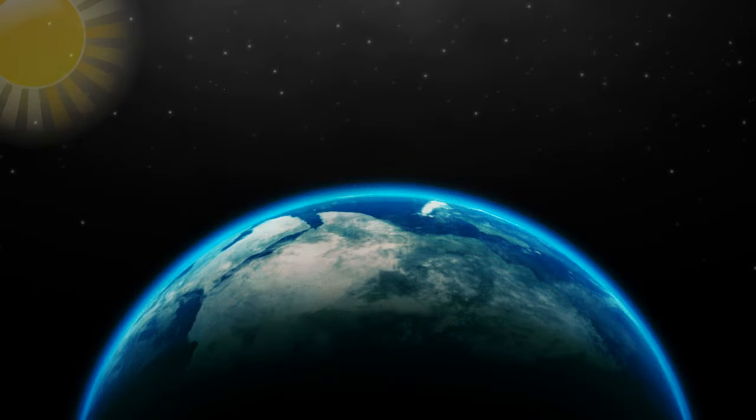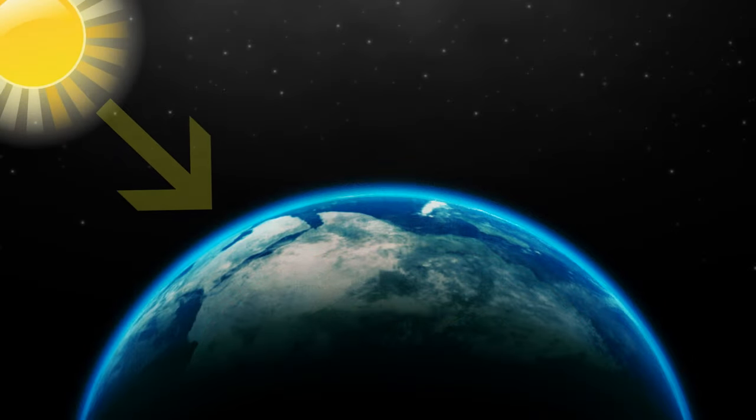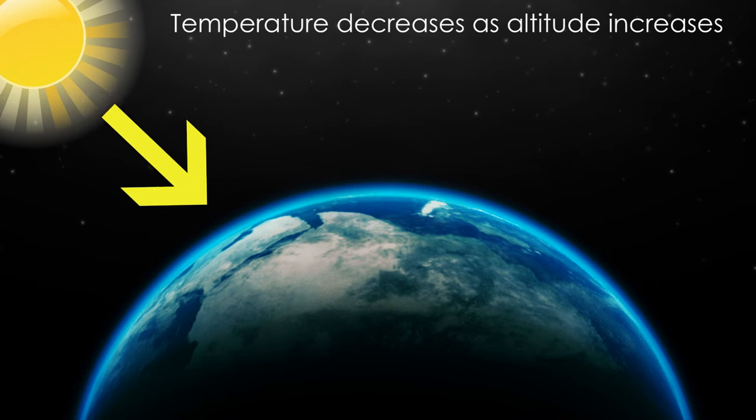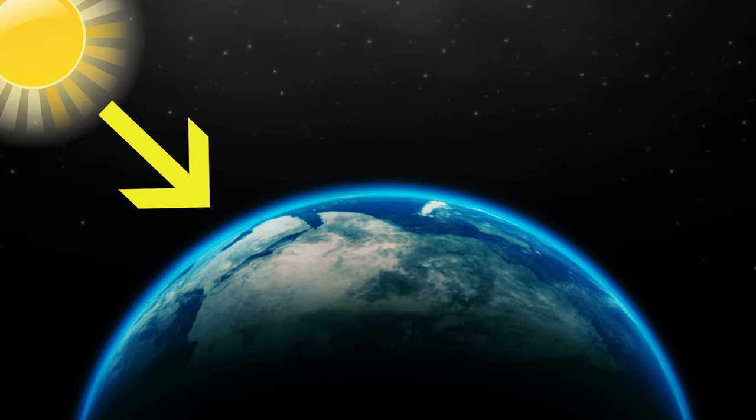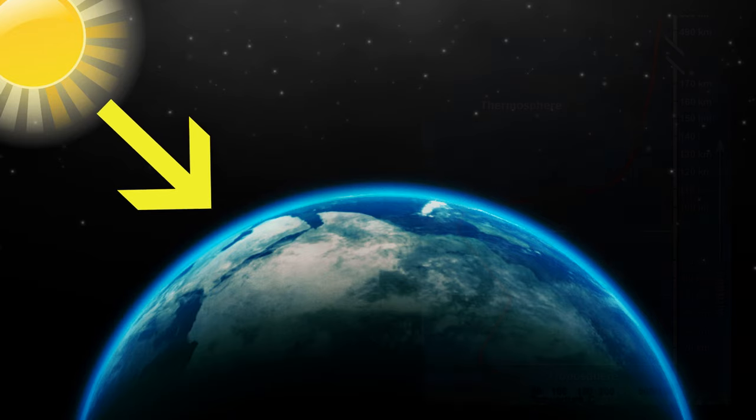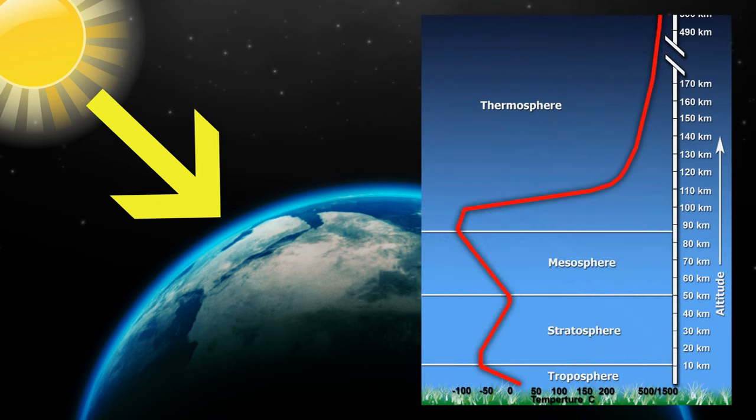The temperature changes with increasing altitude as the Earth is heated by the Sun. Therefore, we conclude that the temperature decreases as the altitude increases within the troposphere as we get farther away from the surface. We will only focus on how the temperature changes within the troposphere and stratosphere as it is in these layers where aircraft fly. The temperature remains constant from the tropopause to the lower parts of the stratosphere, just before rising again.